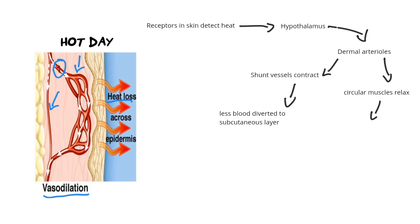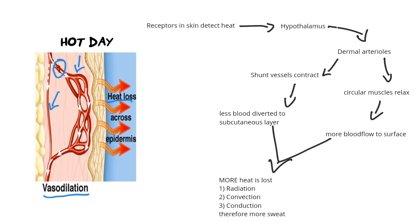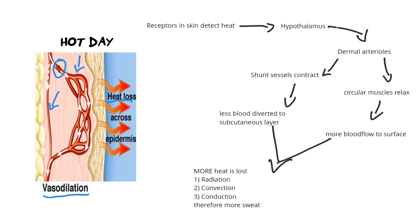On the other side, with the arterioles closer to the surface, the circular muscles at the base relax. When they relax, more blood flows to the surface of the skin — that's why when we're hot we look flushed, pink and red. The blood is going to the surface to release heat, but also to evaporate sweat. When these two actions are combined, the outcome is that you lose more heat through radiation, convection, and conduction, and you sweat more. When the water evaporates off the surface of your skin, it takes the heat with it — that's what cools you down. Examiners have also been known to overlap this with aldosterone and salt regulation, since sweating means losing both water and salt.